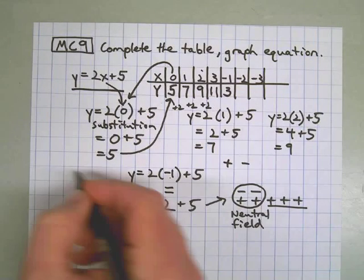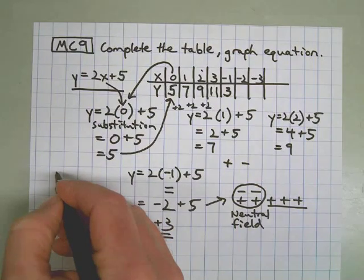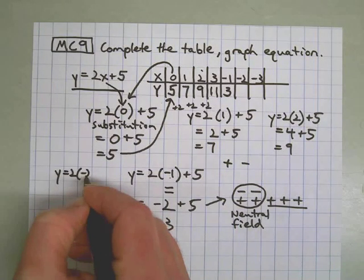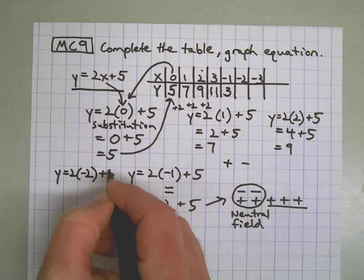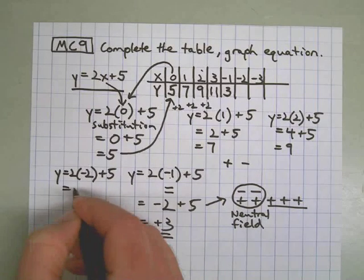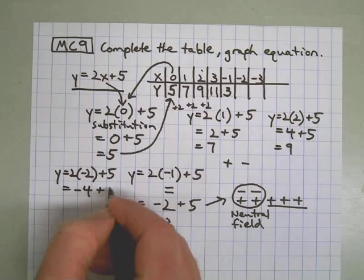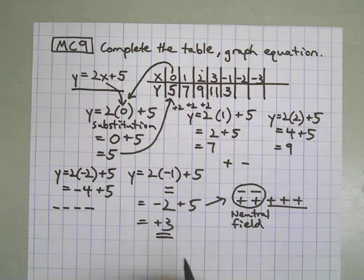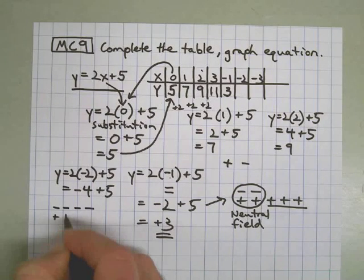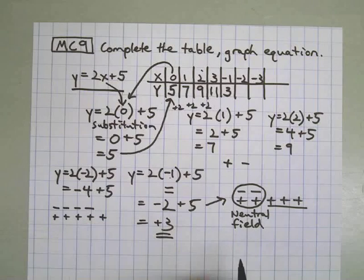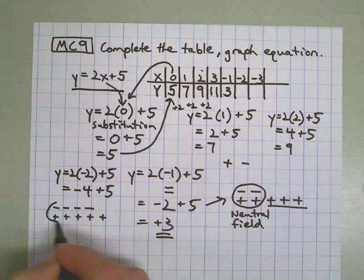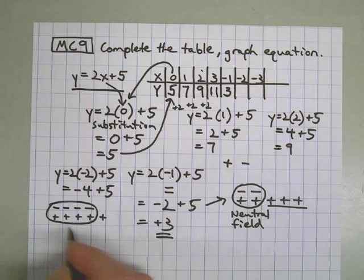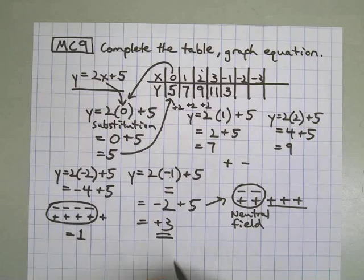Let's go over here for my negative 2. I'm running out of room. 2 times negative 2 plus 5. That's negative 4 plus 5. If I want to draw that picture out, I have 1, 2, 3, 4 negatives. And I have 1, 2, 3, 4, 5 positives. There's my neutral field, and what I have left is the answer. 1.